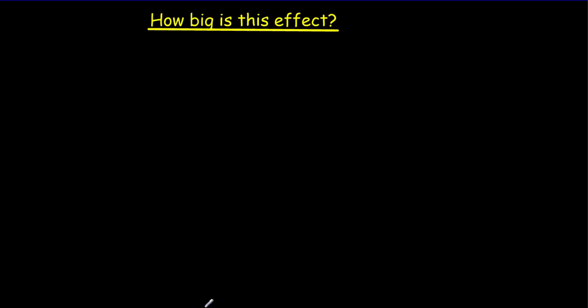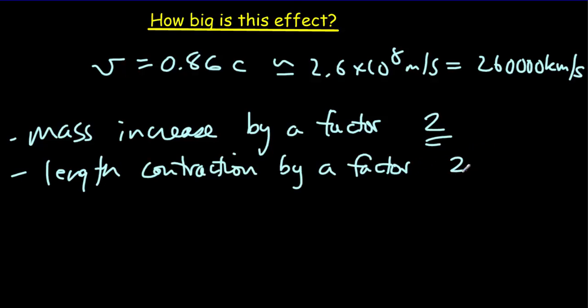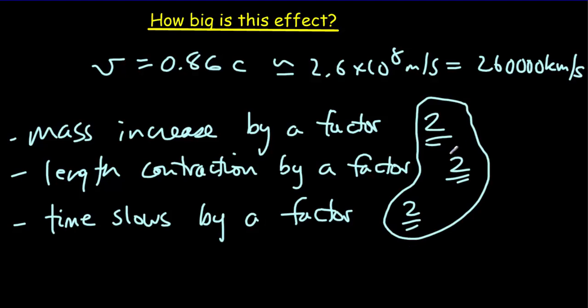Now the next question you're probably asking yourself is, how big is this effect? Well, let's assume we have a relative speed of 86% the speed of light. So we've got V equal to 0.86 times the speed of light, which is about 2.6 times 10 to the eighth meters per second, which is 260,000 kilometers every second. If that was our speed, then we'd get a mass increase by a factor of 2, and we'd get a length contraction by a factor of 2 also. And you could probably guess by what factor the time slows by. Once again, it's 2. And of course, we're going to want to have a formula that's going to generate that factor for different fractions of the speed of light.